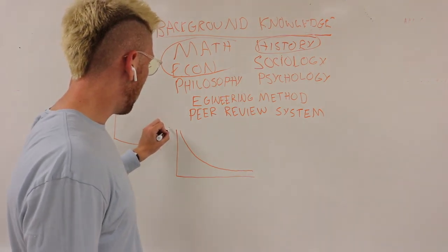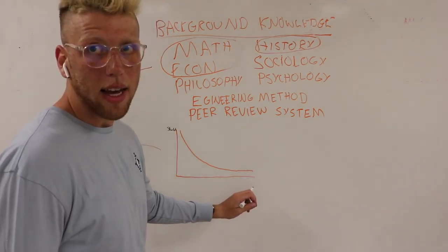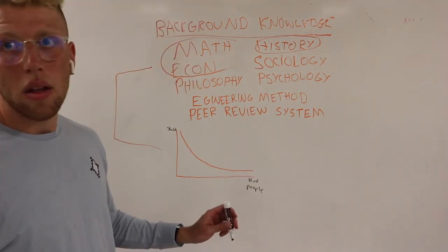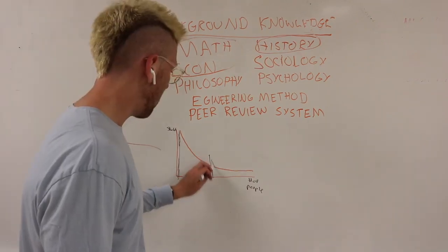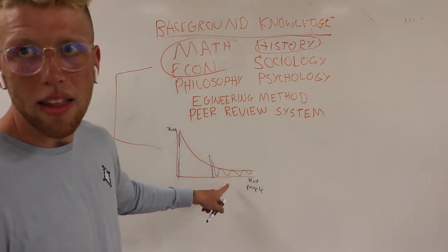So, on the y-axis, you have stuff, and on the x-axis, you have number of people. Now, as you see, a small amount of the people have most of the stuff, and most of the people have none of the stuff.